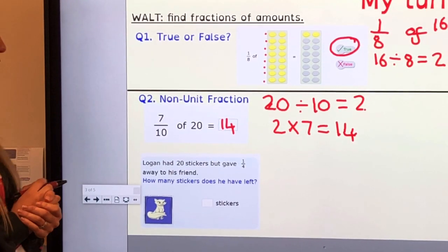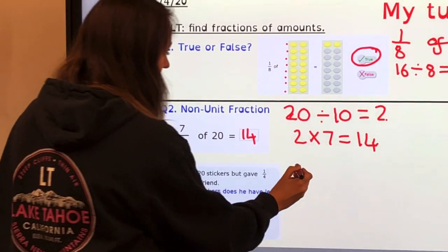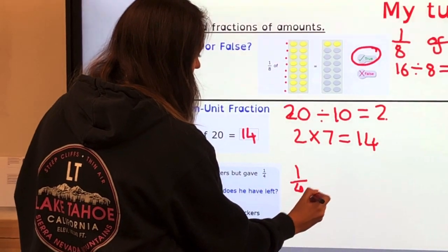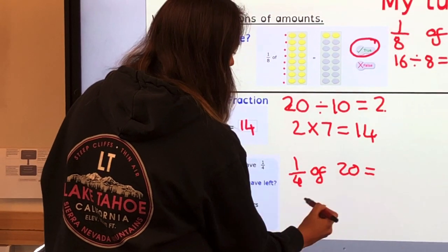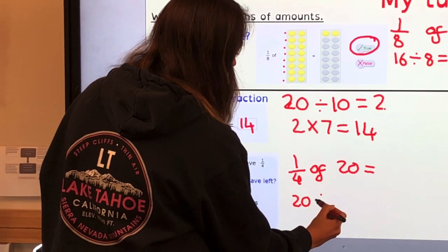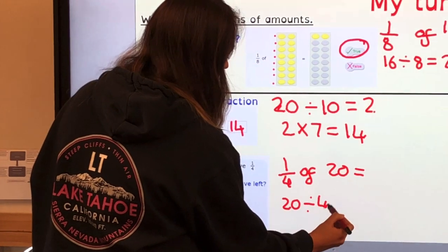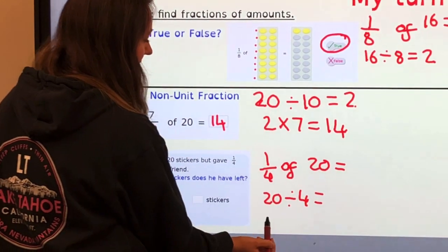First we're going to work out how many he gave to his friend. So one-quarter of 20. I'm going to do 20 divided by 4, the whole divided by the denominator. I can count in 4s or I can half it and half it again.